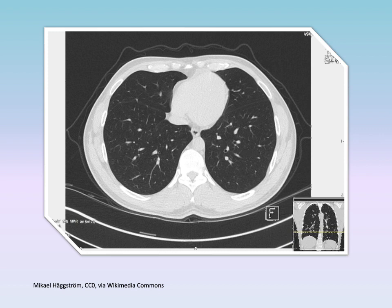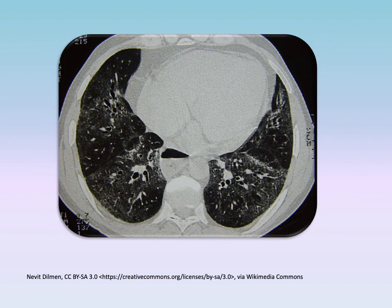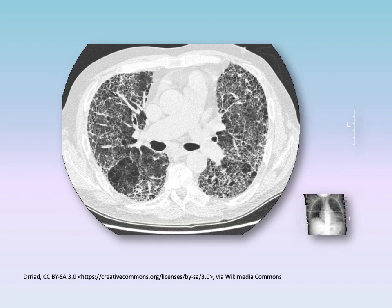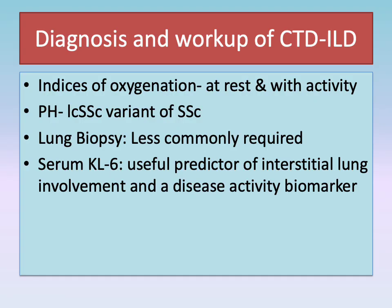This is an axial slice of a chest CT scan showing normal lung parenchyma. The CT scan of the chest showing numerous poorly defined ground glass opacities and some reticulation in a patient with NSIP pattern. The CT scan showing mainly reticulation and honeycombing in a patient with UIP pattern. Other diagnostic workup includes indices of oxygenation at rest and with activity, pulmonary hypertension especially in limited cutaneous systemic sclerosis, and lung biopsies which are less commonly required.